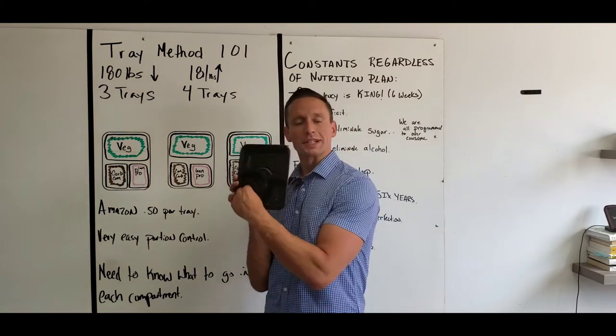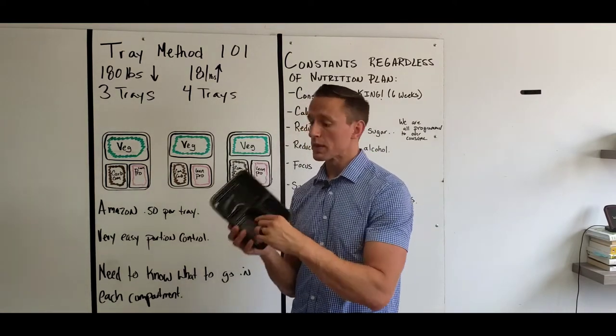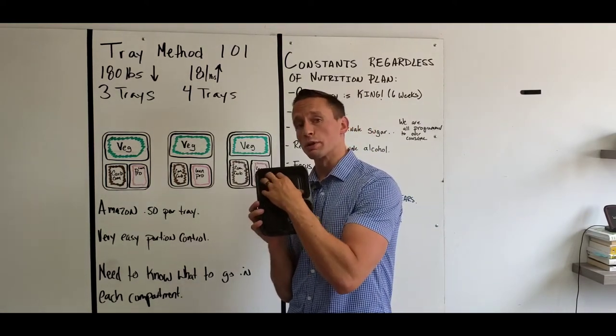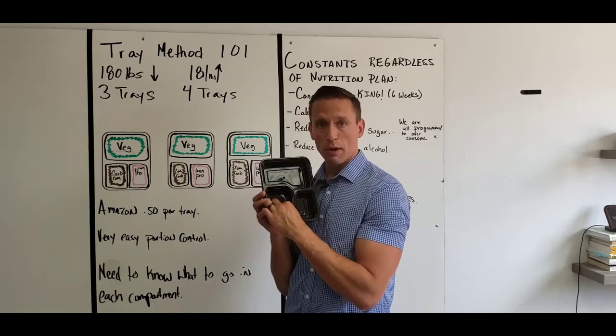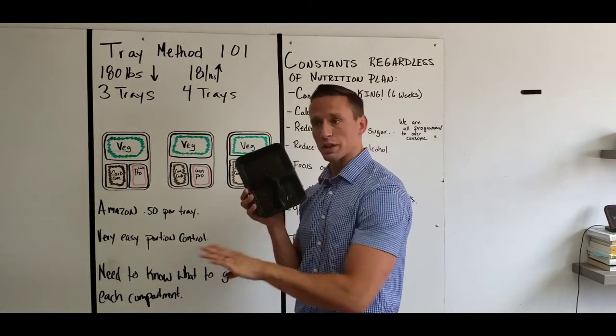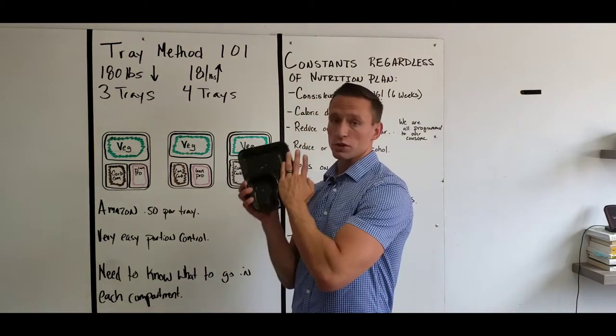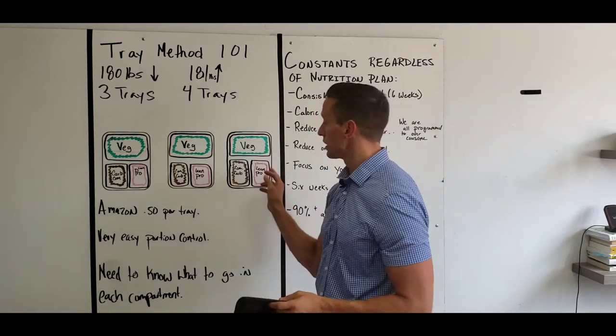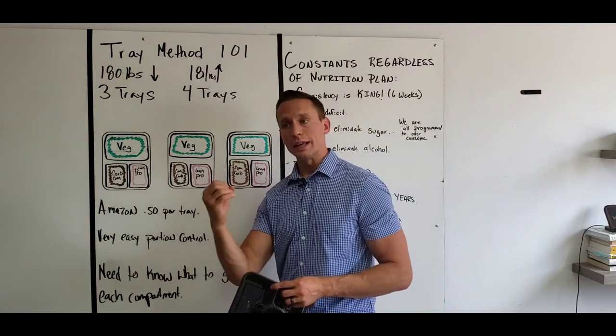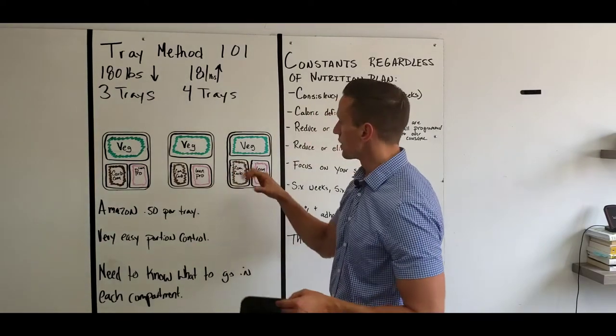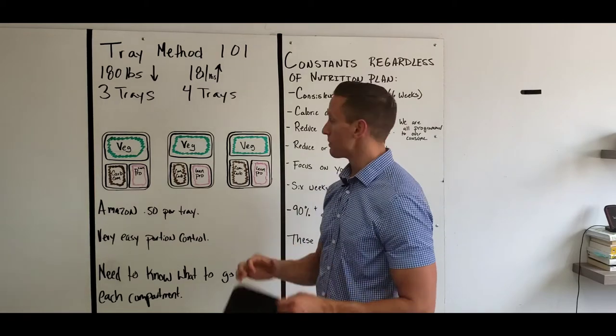But notice the size of that, right? If we were to put the carbohydrate in the larger portion, and the vegetables in the smaller portion, or omit the vegetables, you wouldn't have the same effect. And the same thing. If we were just to forget about our friend called protein, we would have a different effect. So we need to make sure that each tray looks the same.